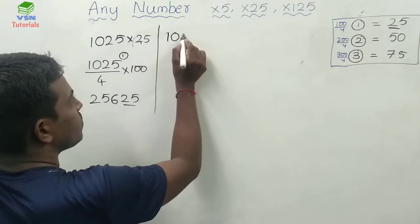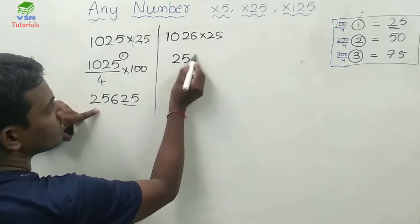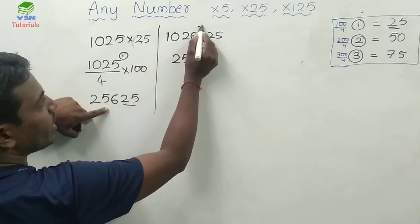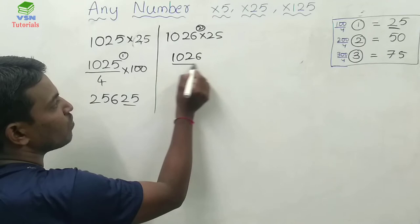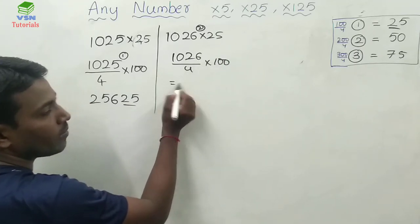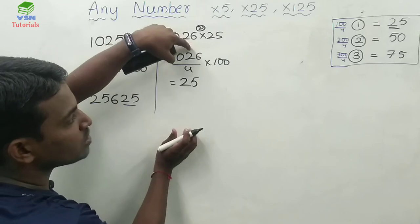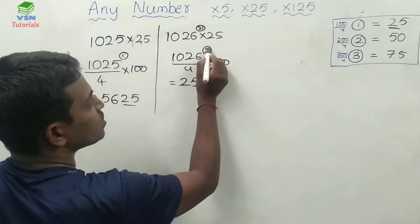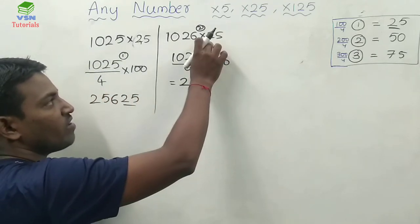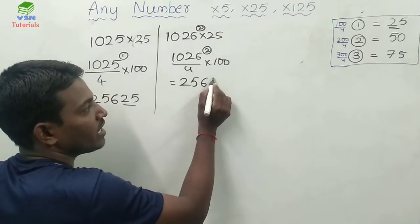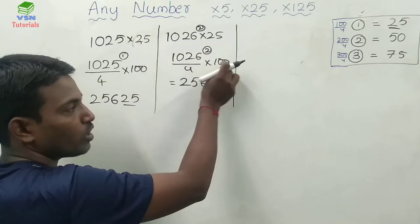Let me take 1026 into 25. That is 1026 divided by 4, multiplied by 100. Working through: 1026 divided by 4 gives 256 with remainder 2. The remainder 2, multiplied by 100, is 200. And 200 divided by 4 is 50. So whenever you get remainder 2, you directly add 50 at the end. That is the trick.